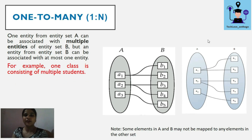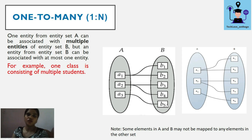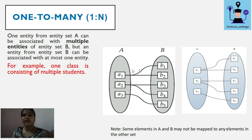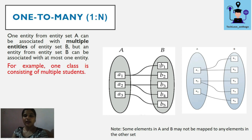One-to-many relationship means one entity set A can associate with multiple entities of B — for example, a1 connected with b1 and b2, a2 connected with b3 and b4. One entity from A can be associated with multiple entities of B, but an entity of B can be associated with at most one entity from A. One-to-one is also a part of one-to-many. For example, one class can contain many students, but one student cannot be part of two classes.